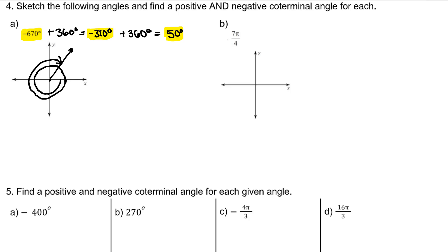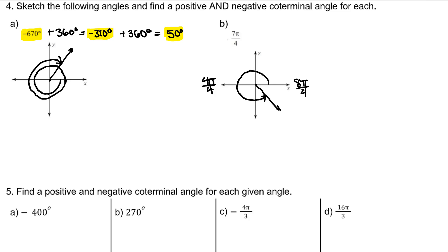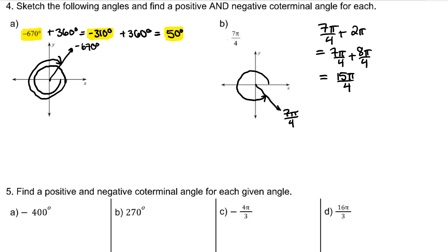For 7 pi over 4 — remember, pi over 4 is a 45-degree angle, so we're looking at 7 forty-five-degree angles. This is positive, so from the initial side we go counterclockwise. Going a full 180 degrees is 4 pi over 4; a full circle in terms of pi over 4 would be 8 pi over 4, or 2 pi. To find coterminal angles, add or subtract 2 pi. That means 15 pi over 4 and negative pi over 4 are both coterminal angles to 7 pi over 4.